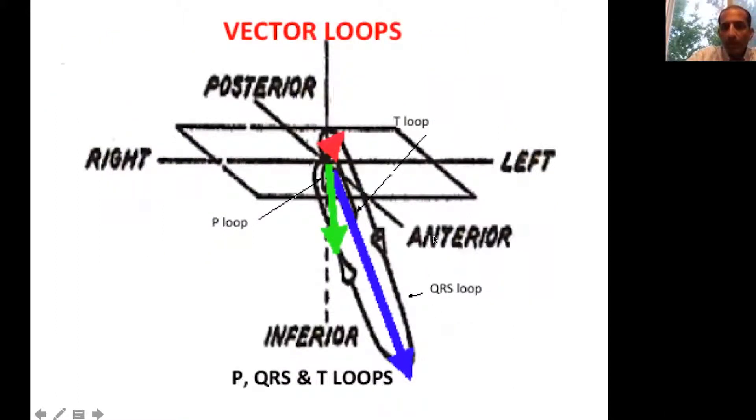The vector loops can be directed more anteriorly, more leftward, more rightward, more inferiorly, more posteriorly, depending on different disease processes that can happen.